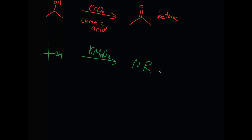No alpha hydrogens. Alpha hydrogens mean that the carbon the alcohol group is attached to needs to have some hydrogens on it for any of these oxidation reactions to work.